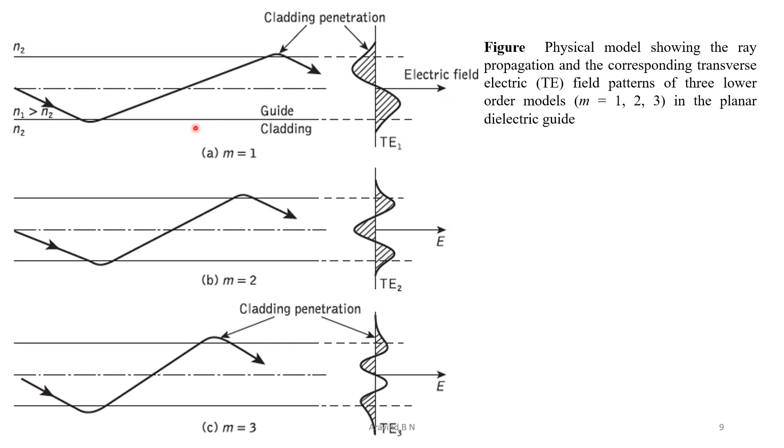So, let us have an understanding of this wave representation. So, this wave representation from TE1 up to TE3, we can understand that the penetration of this ray to the cladding is going to increase from TE1 up to TE3. So, correspondingly, its electric field is going to change.